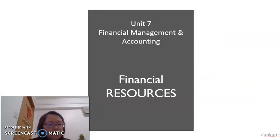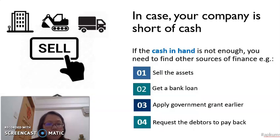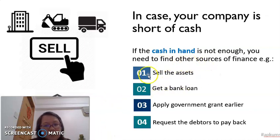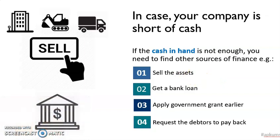I will start with explaining the financial resources. A company, especially a new company, might be facing the problem of not enough cash or short of cash in hand. So the company can decide to sell assets to get enough cash to pay for the expenses. At the same time, the company might want to get a bank loan — to borrow money from the bank to pay for the expenses.